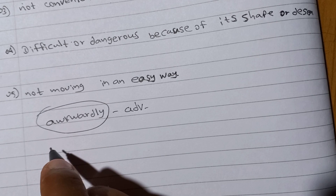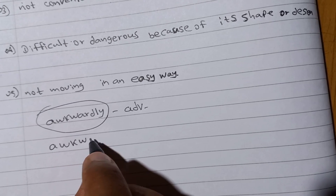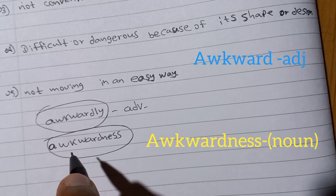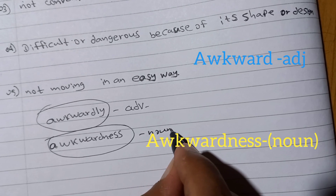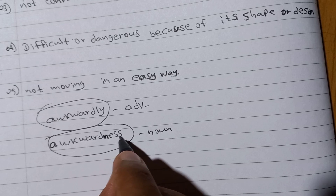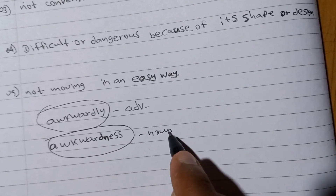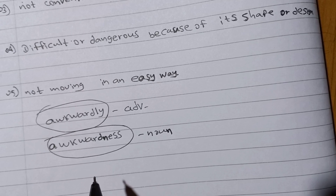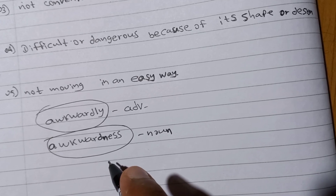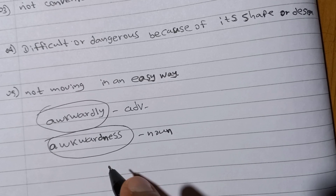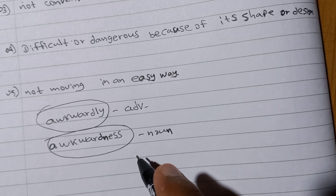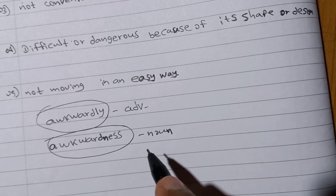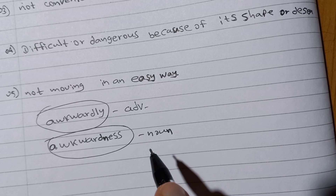The noun form of awkward is awkwardness — we add N-E-S-S. The adjective is awkward and the noun is awkwardness. For example: she laughed to cover up her feeling of awkwardness — meaning she laughed to cover up her feeling of inconvenience.